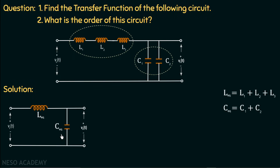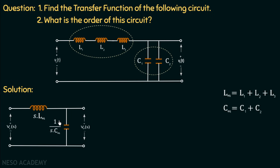Now let us find the transfer function. The first step is to draw the Laplace equivalent circuit. In this circuit, the input voltage is V(s), the output voltage measured across the equivalent capacitance is Vout(s), the impedance of the inductor is s·L_eq where L_eq = L1 + L2 + L3, and the impedance of the capacitor is 1/(s·C_eq) where C_eq = C1 + C2. The inductor and capacitor are connected in series.